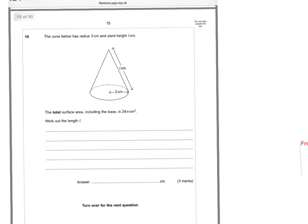Okay, so in the question you've got the cone below has a radius of 3 cm and a slant height L. The total surface area including the base is 24 pi cm squared and you've got to work out the length.